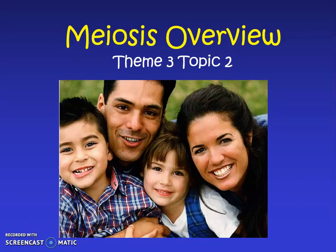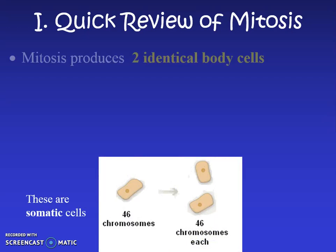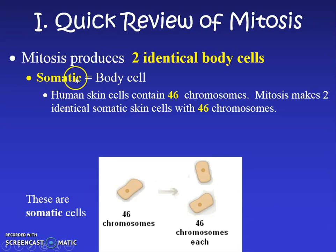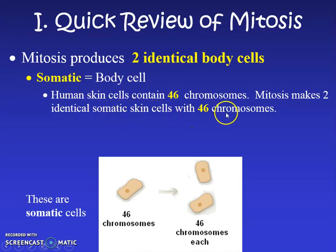Hello biology students, we're going to talk about meiosis. Before we can learn about it, we need to review mitosis. Remember, mitosis produces two identical body cells — body meaning something like skin, stomach, or nose cells, also called somatic cells. For example, human skin cells contain 46 chromosomes, and in mitosis we make two identical somatic skin cells also with 46 chromosomes. The important part is that we're making identical cells.